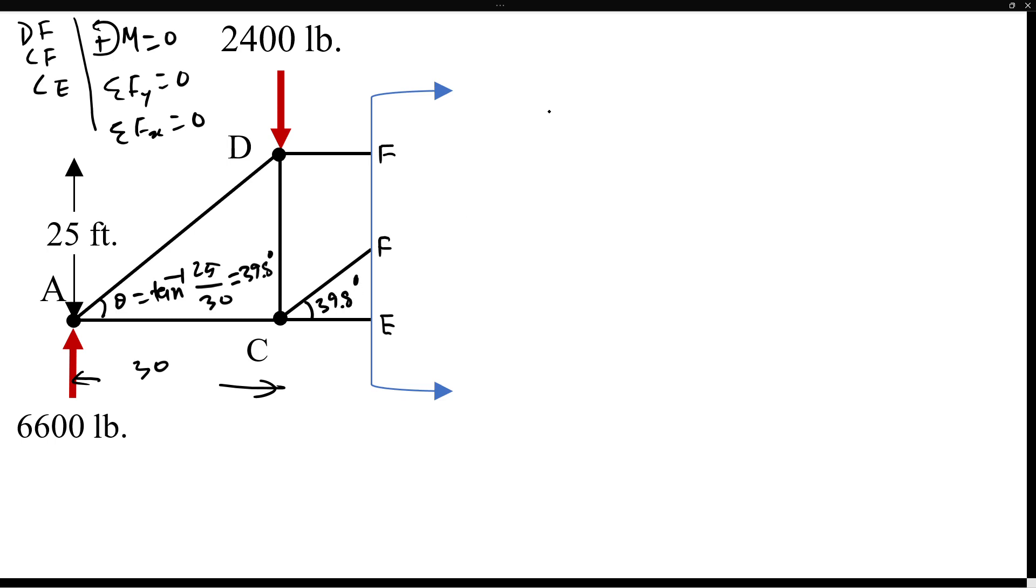Then here we can simply take moments with respect to point C, all counterclockwise moments positive. If you take moments with respect to C, we'll be able to cancel both CF and CE forces. So we're only having this reaction force, 6600 pounds, which will do a clockwise moment, so it's going to be minus with respect to C: 6600 times 30 feet away from C.